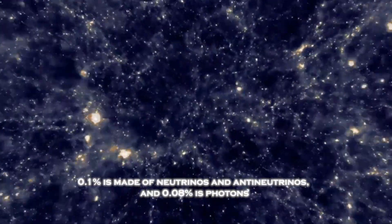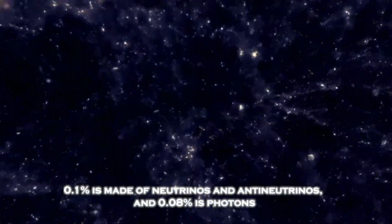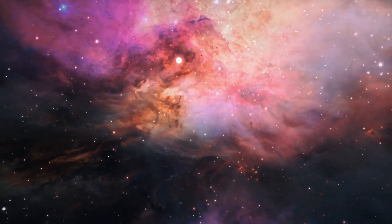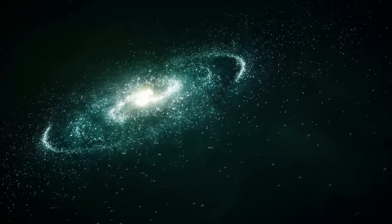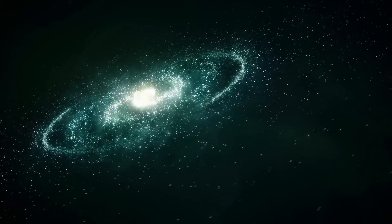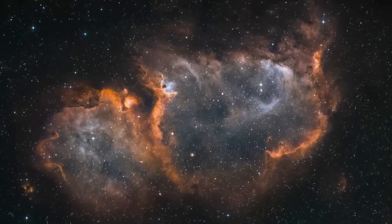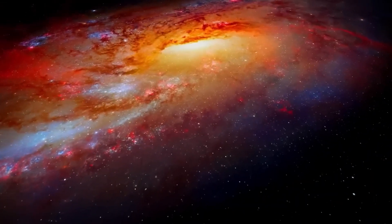Only 0.1% is made of neutrinos and antineutrinos and 0.08% is photons. No other entities, such as cosmic strings or textures, are found. Knowing these components with such precision allows us to apply the laws of gravity, according to Einstein's theory of general relativity, to predict the future fate of the universe.